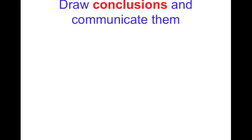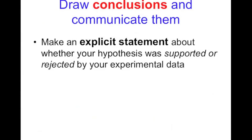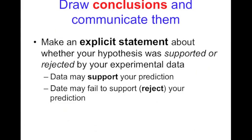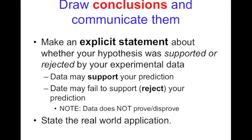Last but not least, we're going to draw conclusions from what we've done and communicate those so others can learn from what we've learned. In your conclusion, you're going to make an explicit, a very clear statement about whether your hypothesis was supported or rejected by your experimental data. We never say right or wrong. We always use the term supported or rejected. Either the data supports what you predicted or it fails to support, and then it causes you to reject your prediction that you made. We never say that we're proving or disproving anything. Typically in the conclusion you're also going to state some sort of real world...